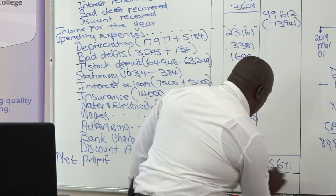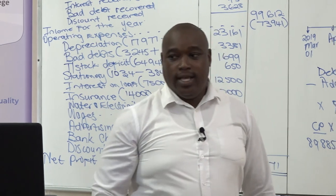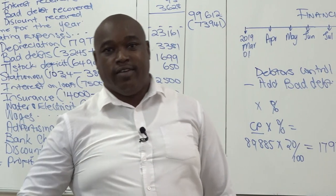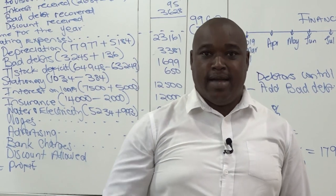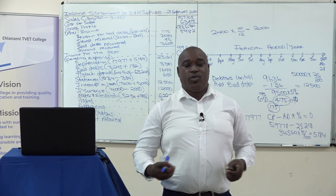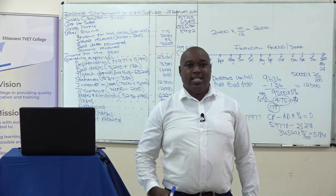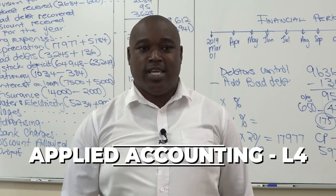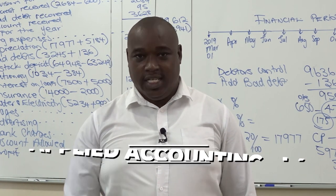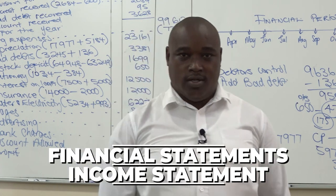If you are instructed to prepare an income statement, always get only one final figure — that figure will determine the performance of the business. You need to work between the pre-adjustment trial balance and the adjustments, because if you omit one of the adjustments or accounts, that will give you a wrong picture, and you might record a net profit when it's actually a loss.